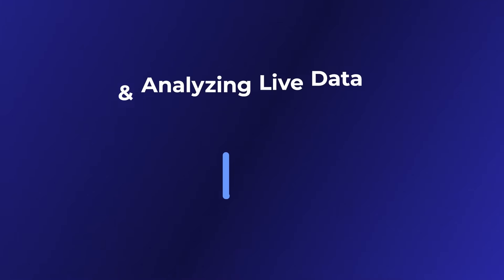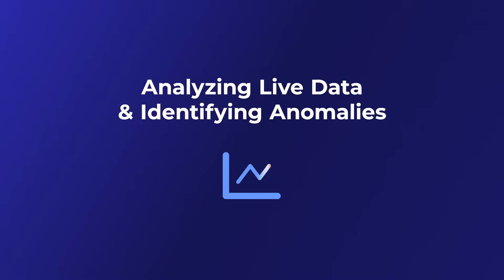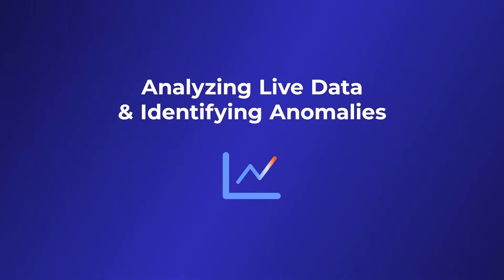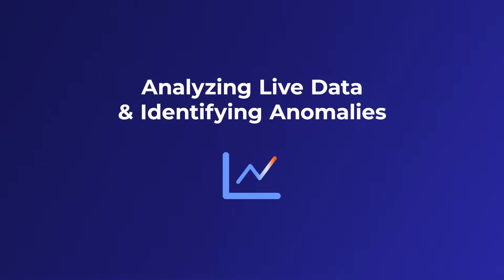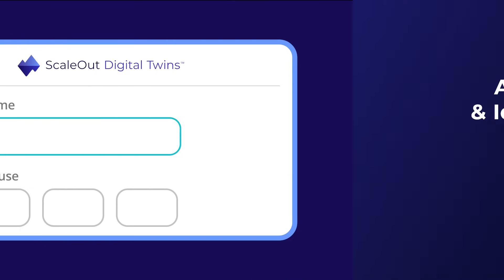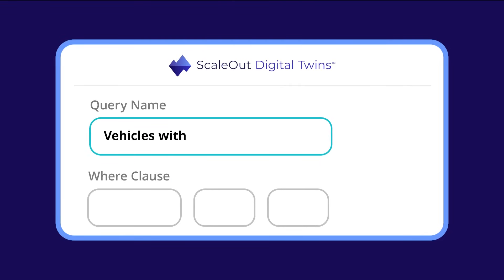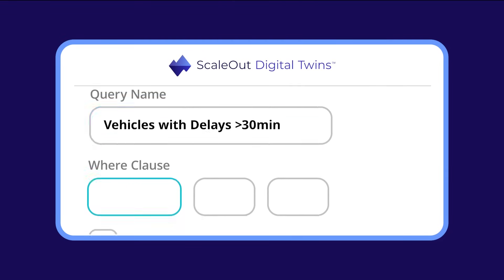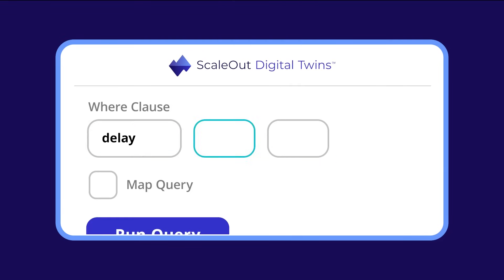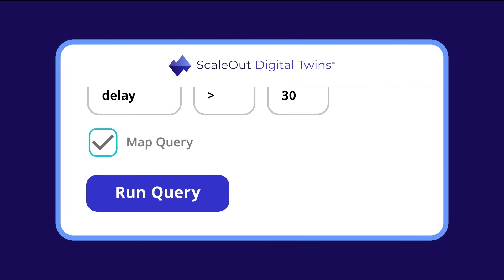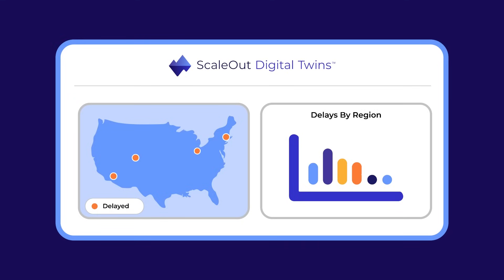Now, let's look at another powerful application: using AI models to help digital twins analyze live data and identify anomalies. With ScaleOut Digital Twins, you can use our intuitive user interface to run queries on live data and create real-time charts.